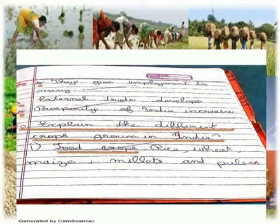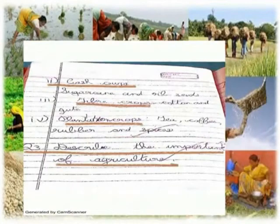Question 2: Explain the different crops grown in India. 1. Food crops: rice, wheat, maize, millet and pulses. 2. Cash crops: sugarcane and oilseed. 3. Fiber crops: cotton and jute.